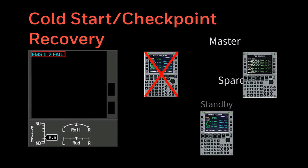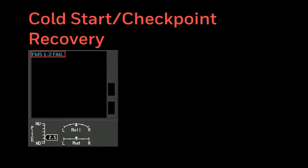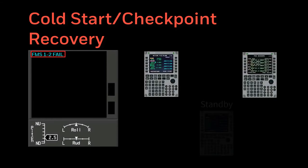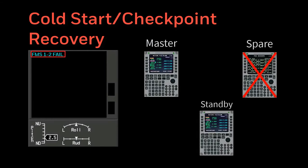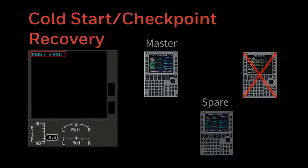The FMS will recover in the same manner as a warm start with no loss of flight plan or performance expected. If the spare FMS is the resetting FMS, the only observable impact will be the CAST message. A cold start is the result of three software exceptions occurring within one minute of each other. The FMS is attempting to recover to a previously stored and stable state.